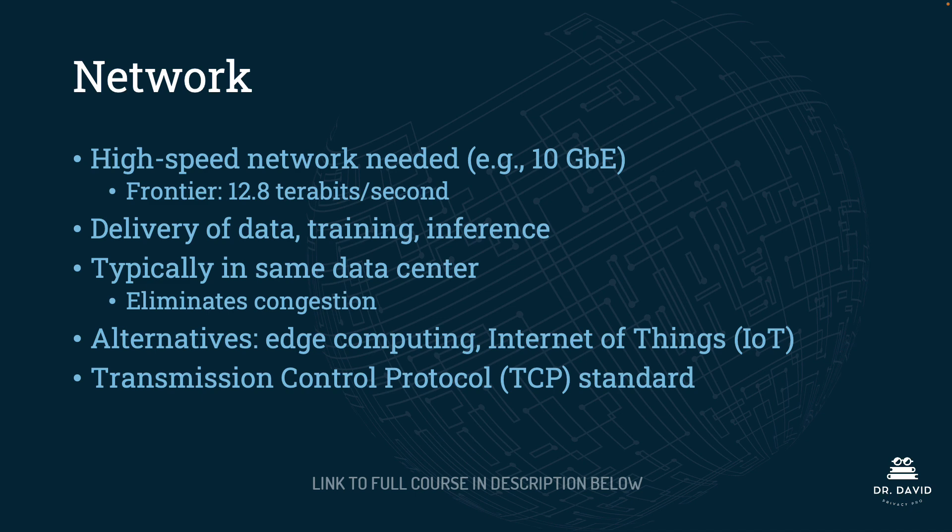There are alternatives to having your supercomputer in one data center. Two alternatives are edge computing and internet of things — we are going to talk about both of those in a future lecture. Just know that there are alternatives to having all of your compute under one roof. You also need to know that the standard protocol for network communication is TCP, or the transmission control protocol. If on the exam you are asked to identify the standard protocol used for network communications, you would choose TCP. That's all you're going to need to know.